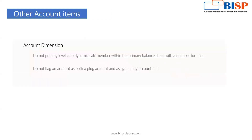For other account items, it is recommended that in the account dimension we do not put any level-zero dynamic calc member within the primary balance sheet with a member formula, as it may disturb calculations. We also should not flag an account as both a block account and a plug account — do not flag both together and assign a plug account to it.